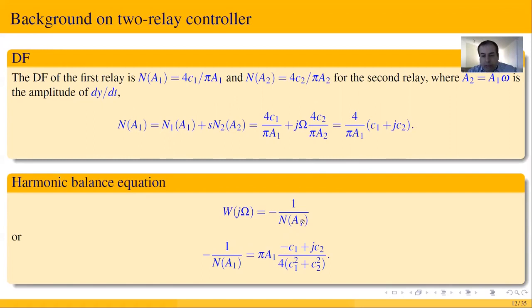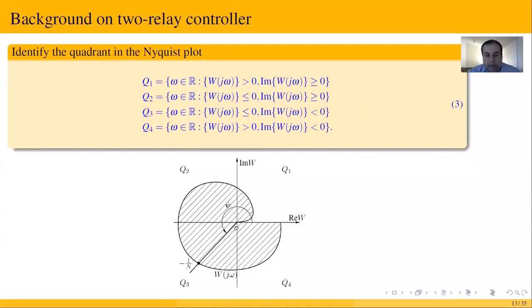This is the Nyquist plot and the describing function method. If the intersection exists, then there exists a periodic solution.